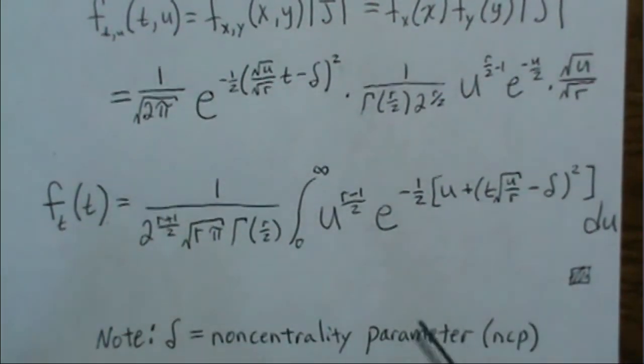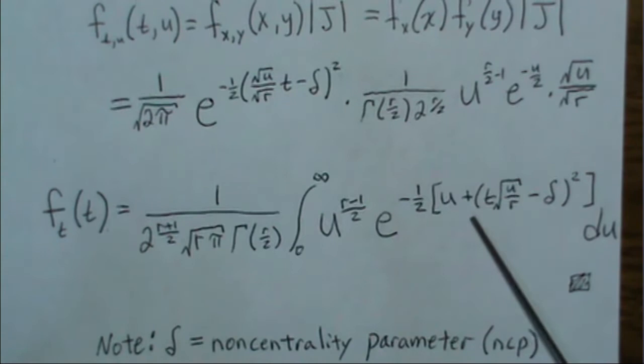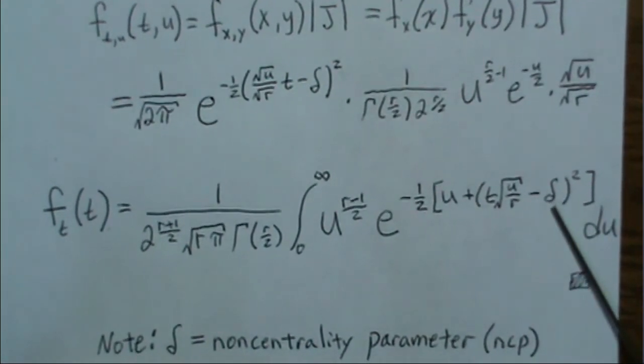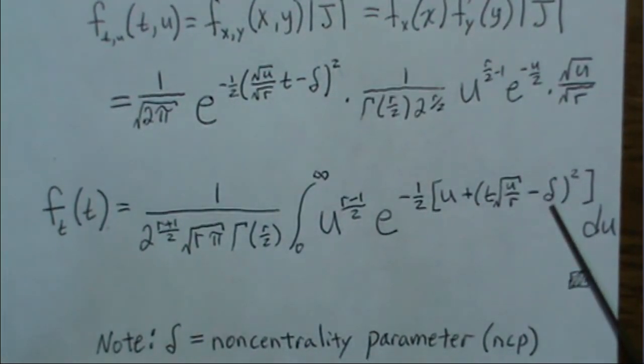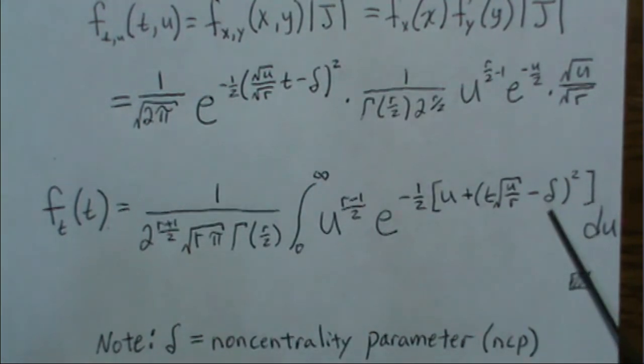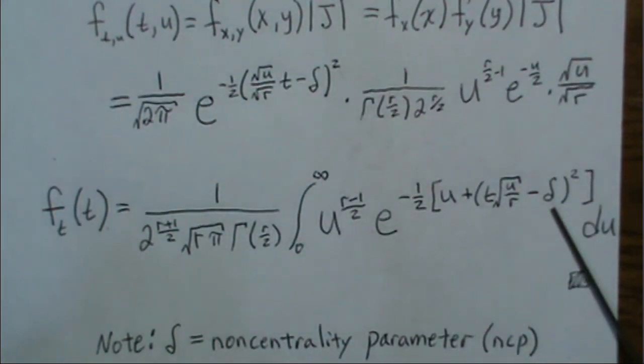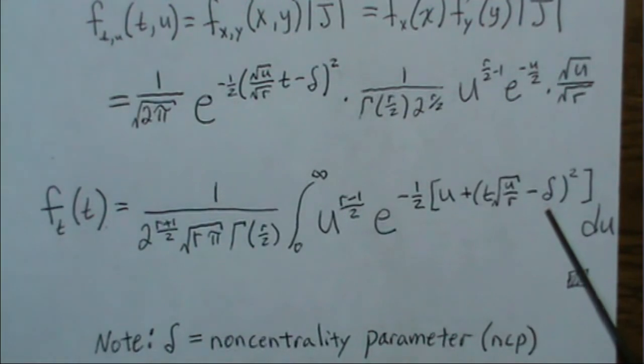So one note is this one little parameter right there, delta. That's called the non-centrality parameter, and we're going to see how that affects the shape of the t distribution when we look at this in R.